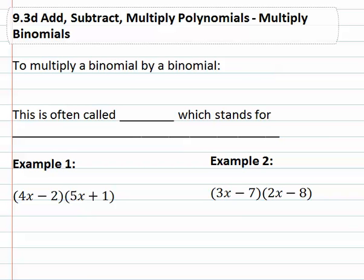In this video we're going to look at how we can multiply two binomials together. An example of a binomial is something with two terms, so it will be something like A plus B times C plus D.